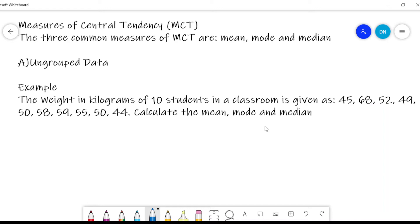The first example we want to look at is ungrouped data. The example is the weight in kilograms of 10 students in a classroom is given there: 45, 68, 52, 49, 50, 58, 59, 55, 50, and 44. Therefore, we want to calculate the mean, the mode, and the median of the given data.